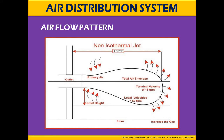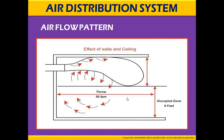Here is the plan view of the airflow pattern. As you can see, primary air comes out from the outlet and is distributed into the room and across the floor. Here is also the sectional view of an air duct showing how airflow affects the walls and ceiling, and the throw from the duct into the room.